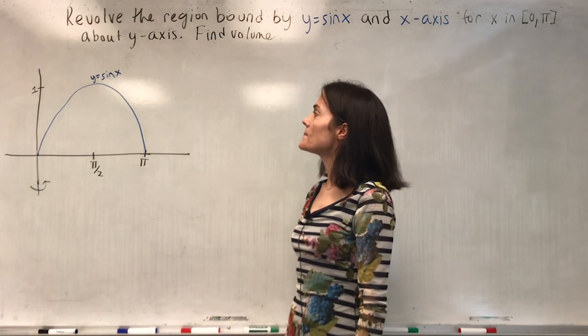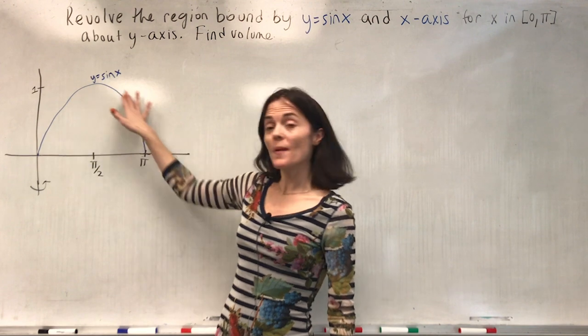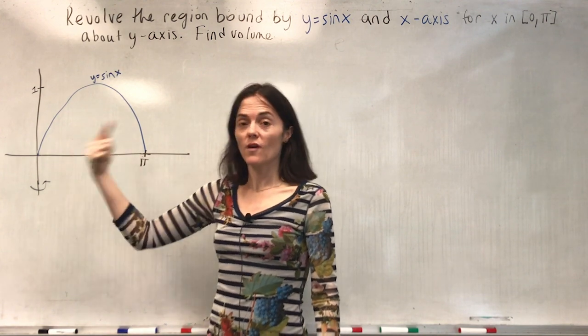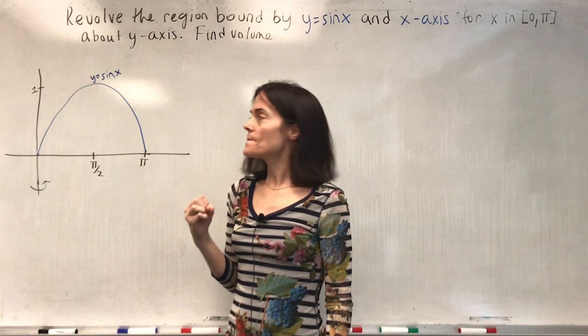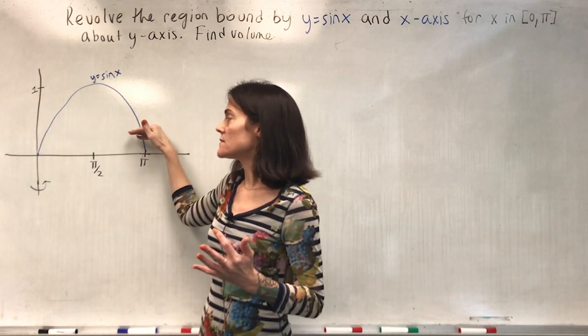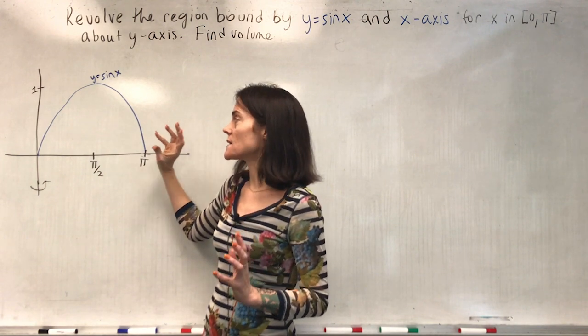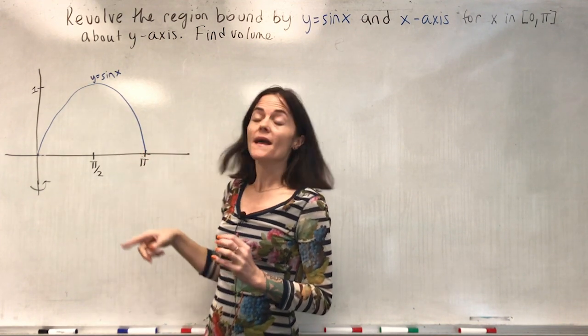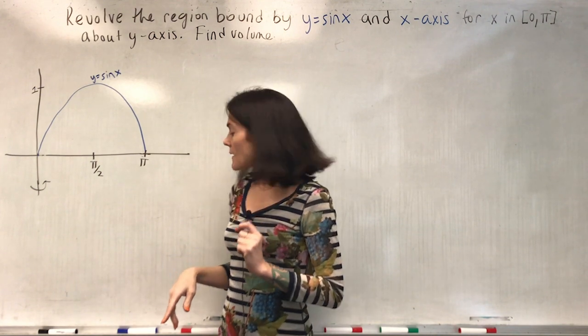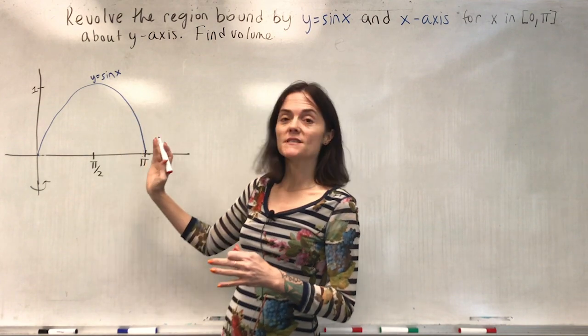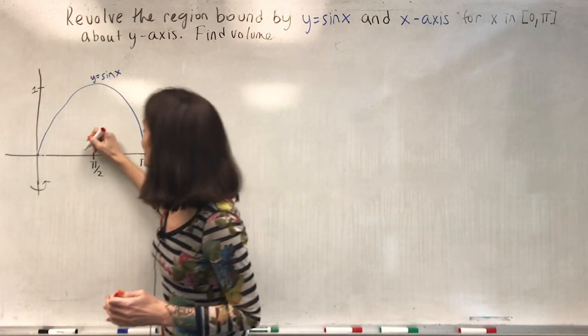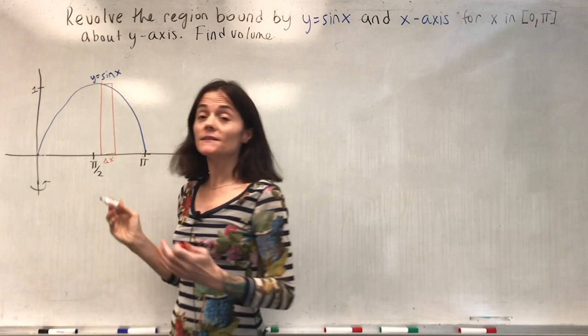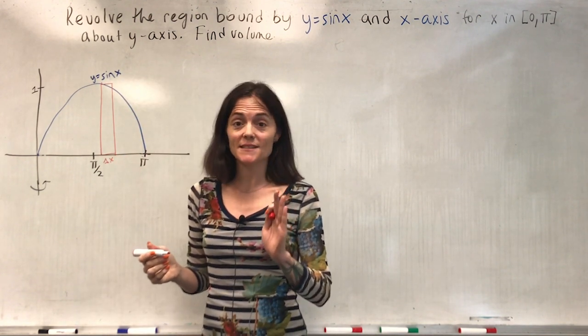Let's do another volume problem. Here we're taking this region bound by the sine of x, the x-axis. So it's this here between zero and pi and revolving it about the y-axis. Now there's nothing wrong with slicing perpendicular to the y-axis and doing washers integrating with respect to y. In my opinion, that's harder because you have to write x as a function of y on each side. What's easier for me, and the way that I will do it, is just to take your representative rectangle parallel to the axis of revolution, which would be something like this. This would be thickness delta x and tell us we are integrating with respect to x.